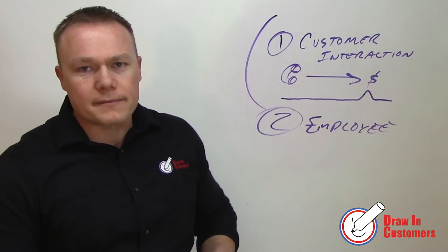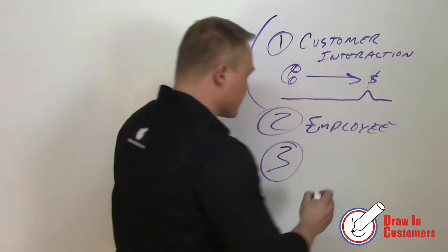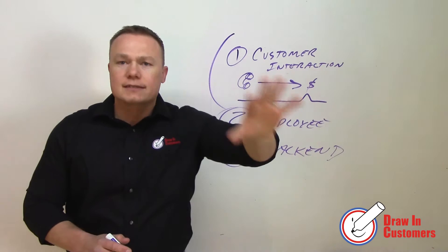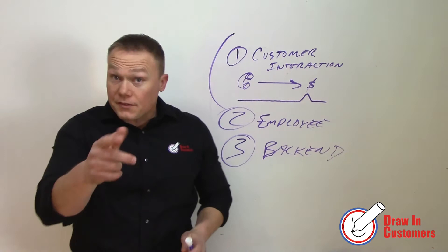Three: this is the whole back end systems. This is everything. This is your computer system, your warehouse, your inventory, vans and trucks and cars and all that jazz, and how they get taken care of and maintained.